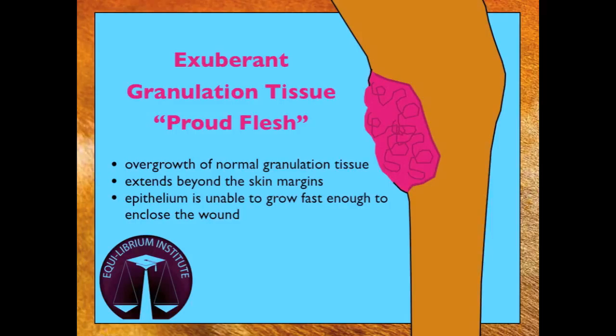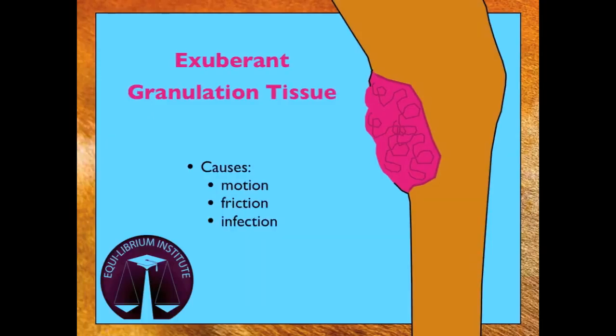Horses' lower limbs are particularly prone to a problem called proud flesh, also known as exuberant granulation tissue, which is an overgrowth of normal granulation tissue. Unfortunately, this tissue extends beyond the skin margins and the epithelium is unable to grow fast enough to enclose the wound. Proud flesh develops on the lower limbs when there is excess motion, friction, or infection. Wounds over joints are particularly prone to proud flesh because of the motion of the joint.